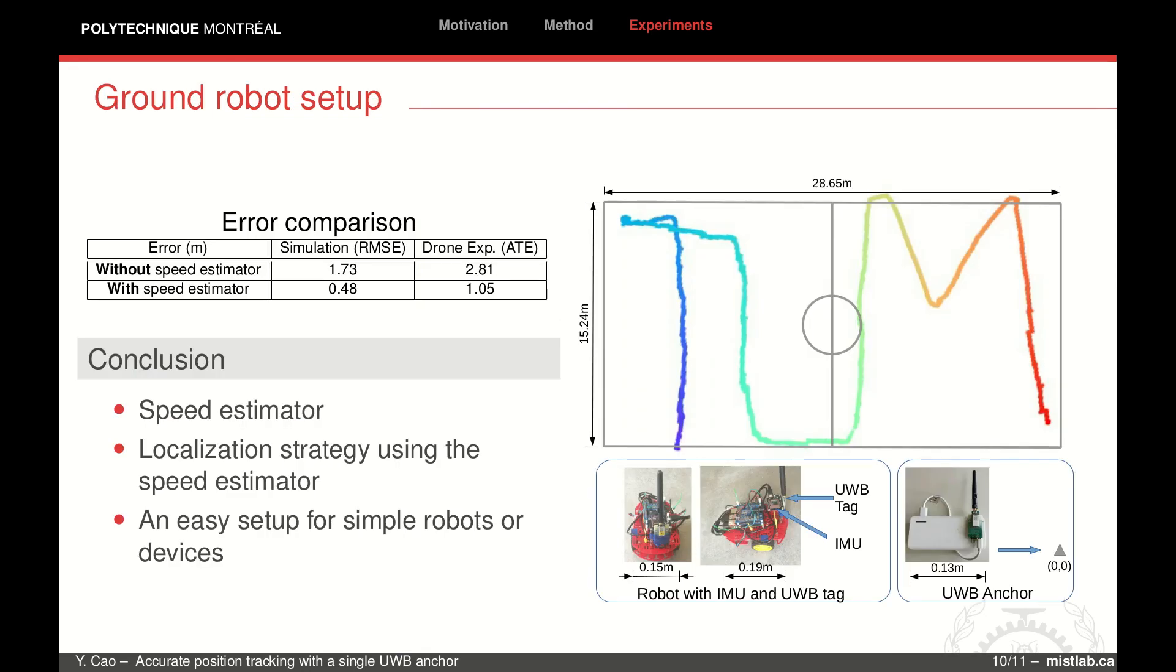In summary, using only one anchor setting, we get around 1 meter absolute trajectory error, which is much lower than the vanilla EKF, which has an accuracy of 2.8 meters. In simulation, the accuracy increased by more than three times.